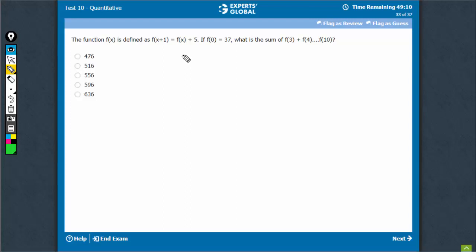F0 is 37, so F1 would be 42, F2 would be 47, F3 would be 52 and therefore 52, 57, 62, 67.